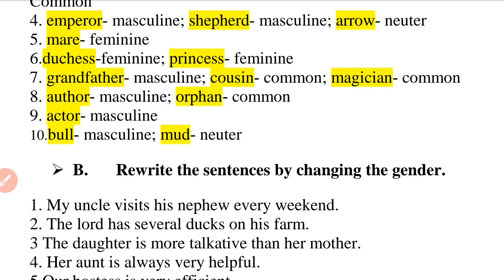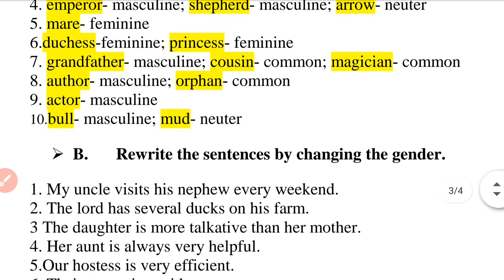Question number 9: the actor is masculine gender. Question number 10: 'I fell off the bull onto the soft mud.' Bull is masculine gender and mud is neuter gender.